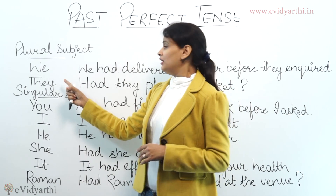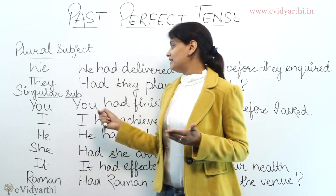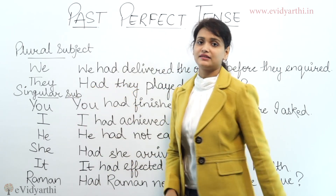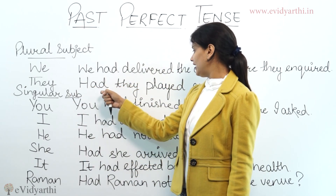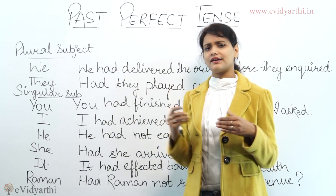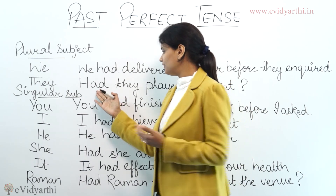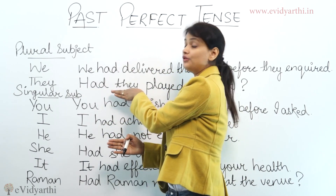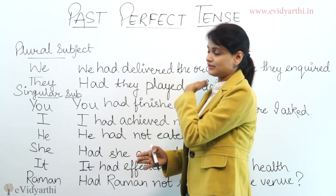Now let's see the interrogative sentence — how to form a question. Here, the helping verb of the tense comes before the subject. The helping verb is 'had'. For example: 'Had they played cricket?' — Here 'had' comes first, then the subject, then the third form of the verb, then the rest.